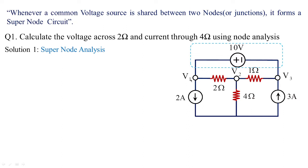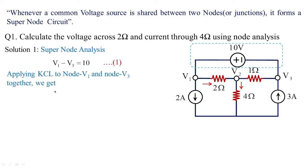With this 10V source, the positive terminal is placed at node 1 and the negative is placed at node 3. We need to calculate voltage across 2 ohms and current in 4 ohms using node analysis. So first: V1 minus V3 equals 10 — that is what is obtained. This is one kind of super node equation, and we frame the other parameters connected to node 1 and node 3 together. That's why we are going to apply KCL to node 1 and node 3 together.